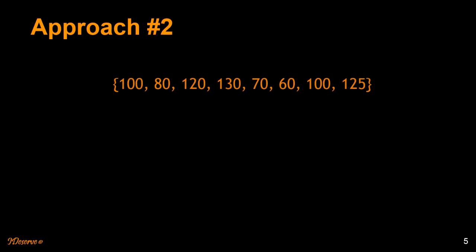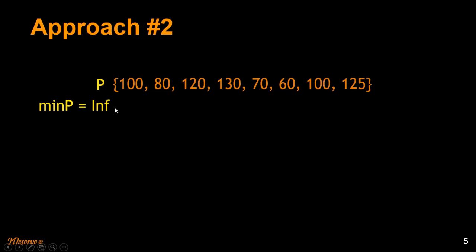So you have this array, which I'll call p. I'll also have a variable that tracks the minimum buying price, initialized to a maximum integer. I also have a profit variable where I'm tracking the profit that I could earn. Let's start.